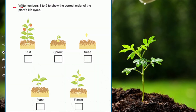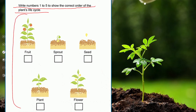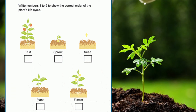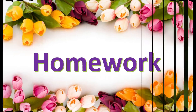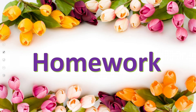Then write the numbers one to five to show the correct order of the plant's life cycle. My dear students, germination of the plant is shown here — aapko correct number lagana hai: konsi picture ke saath one aayega, kis ke saath two, three, four, and five. You can pause the video, complete it, and then submit it to your teacher.